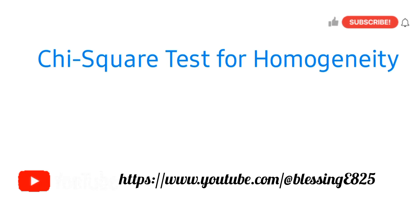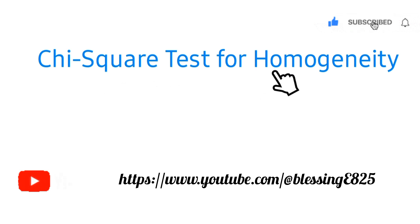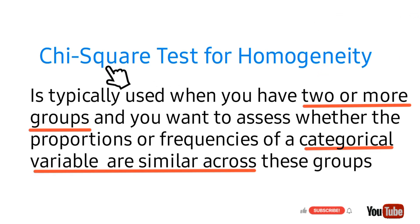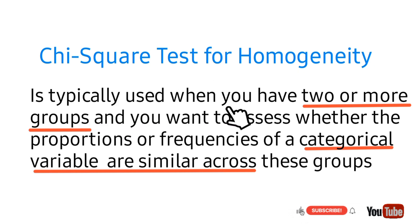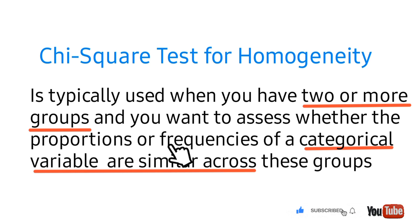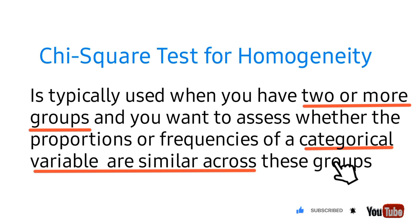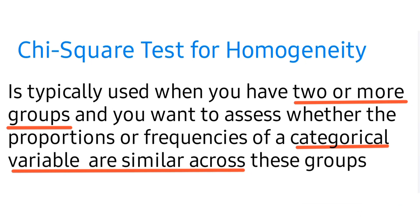Hello, welcome to my tutorial. This video will concentrate on how to solve some numerical problems on chi-square test for homogeneity. Chi-square test for homogeneity is typically used when you have two or more groups and you want to assess whether the proportions or frequencies of a categorical variable are similar across these groups. Now let's look at the challenge we have.